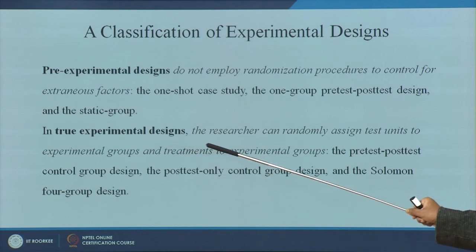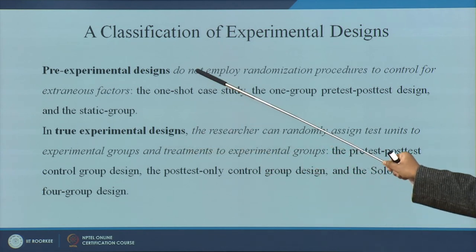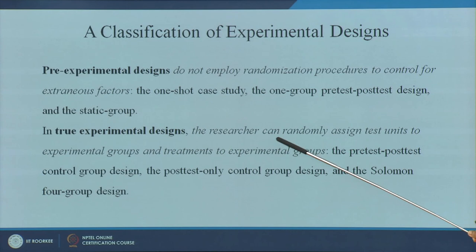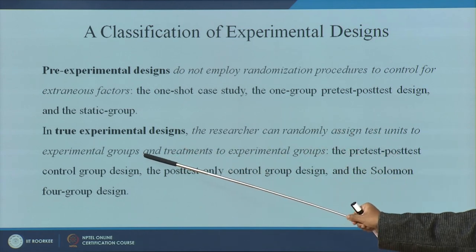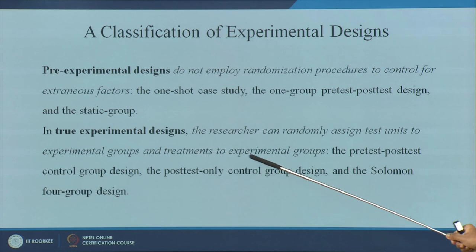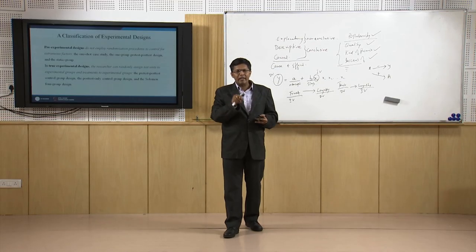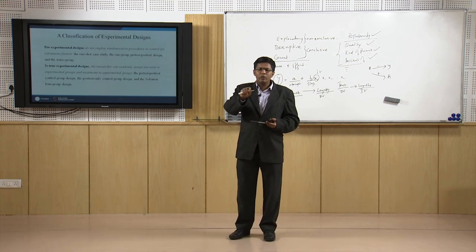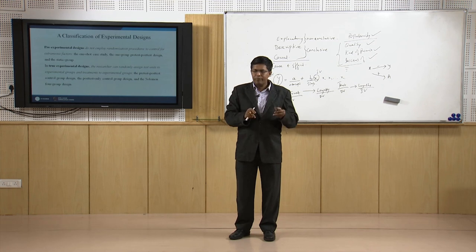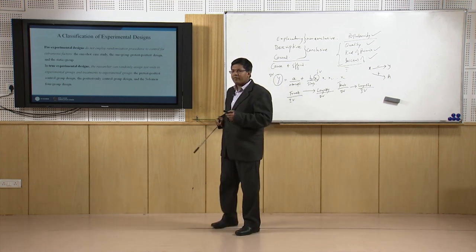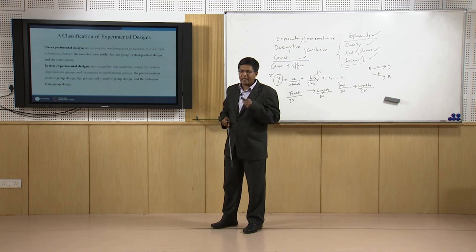True experimental designs give the researcher the ability to randomly assign the test units to the experimental groups and treatments to experimental groups. By doing this, they have reduced bias.